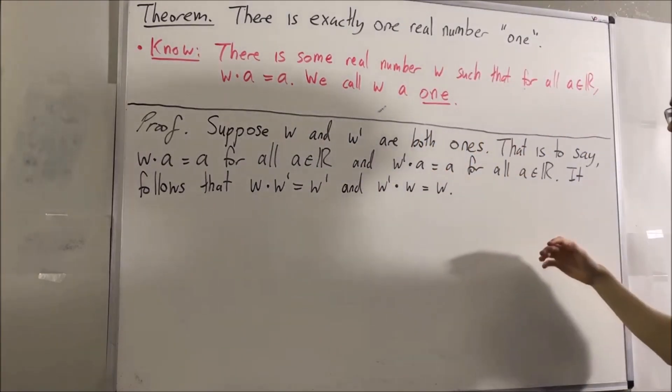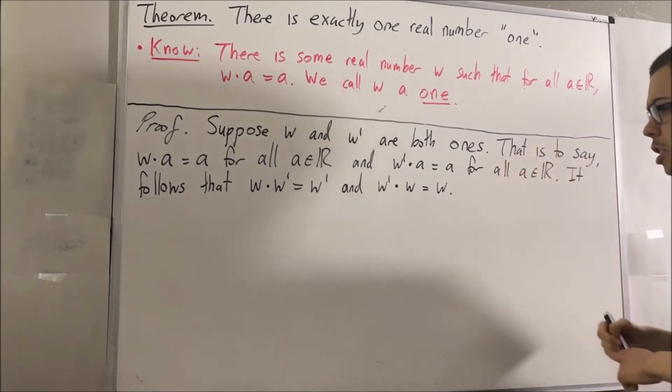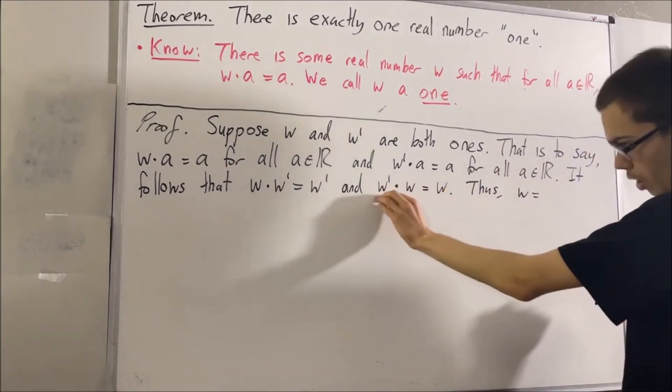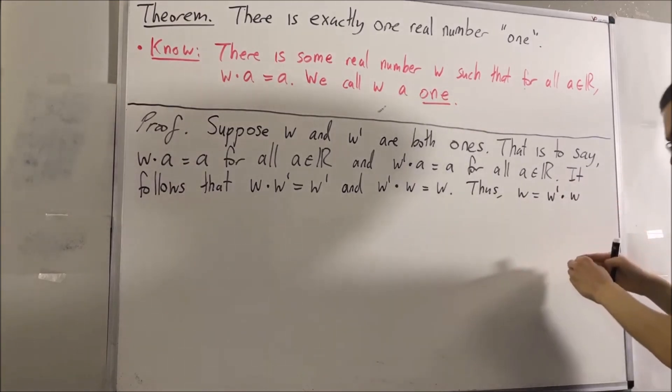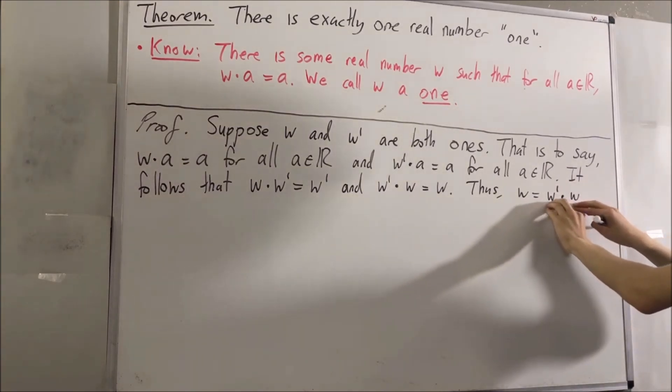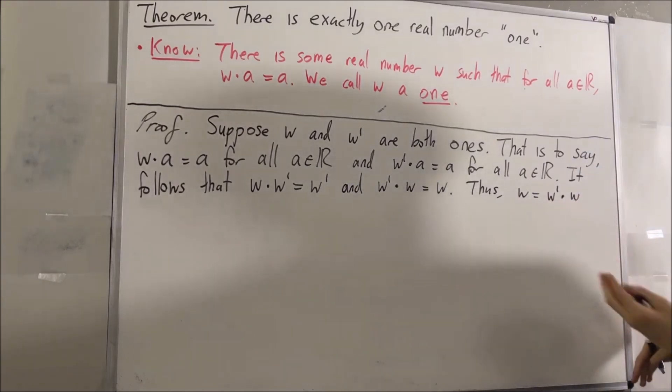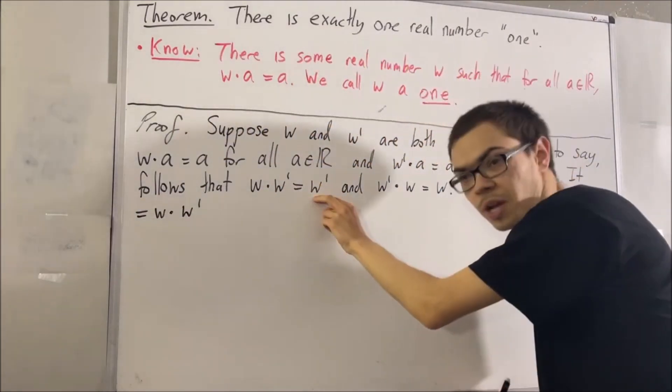And now we can establish a chain of equalities showing that w is equal to w prime. And to see that, check this out: We know that w is equal to w prime times w, and by the commutative property of multiplication, we can swap w prime and w to obtain that this is equal to w times w prime. And we know that w times w prime is equal to w prime.